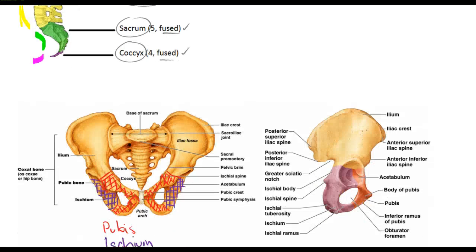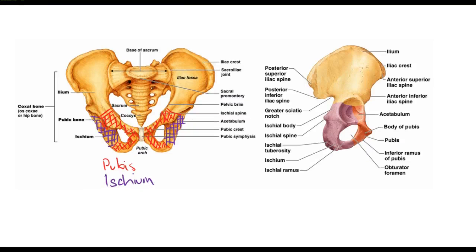The last thing that we look at is the actual pelvic girdle itself. The regions that we need to know are our ileum, which is this major part of bone up the top. Our pubis, which is shaded in red. And our ischium, which is shaded in purple.